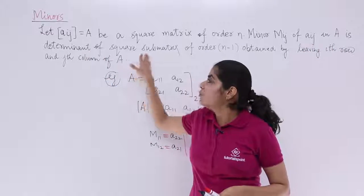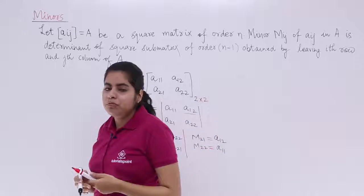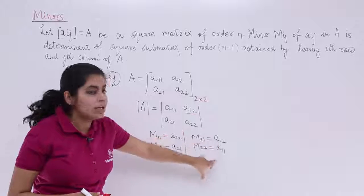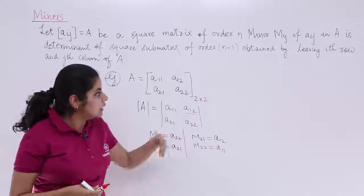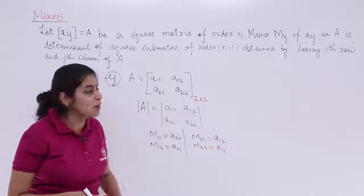Of Aij in A is the determinant of the square sub-matrix. Some of you might still get confused as to we didn't take any determinant, we just took one element. This thing will be clear when we take bigger order matrix, higher order matrix. In the next session, we'll be taking 3x3 matrix also in the same video.